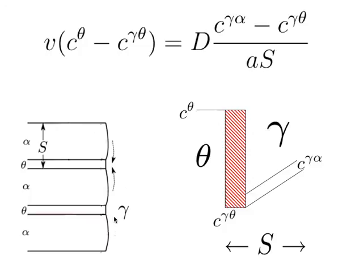The growth rate of pearlite is constant because the overall composition of the pearlite is essentially the same as that of the austenite, diffusion is parallel to the interface, and the diffusion distance is fixed as the interlamellar spacing. The velocity is a function of the diffusion coefficient, phase diagram terms, and interlamellar spacing.